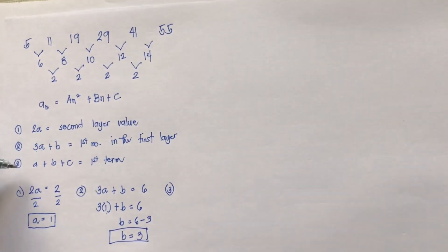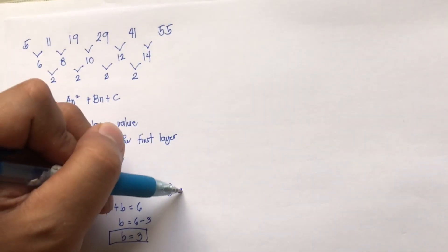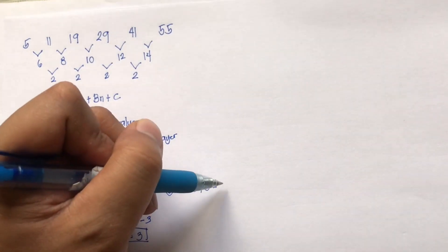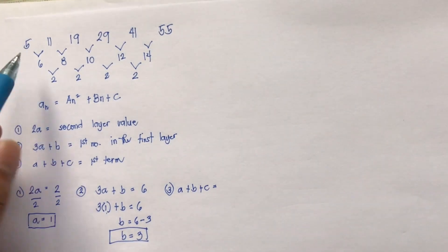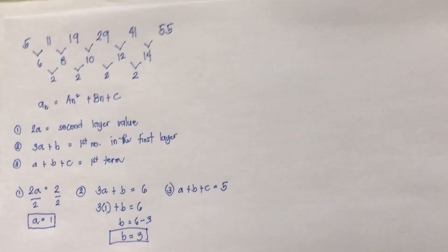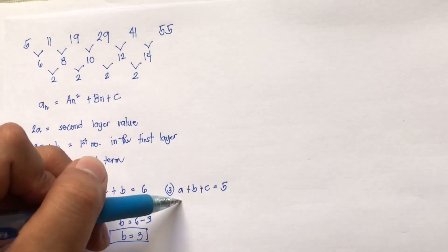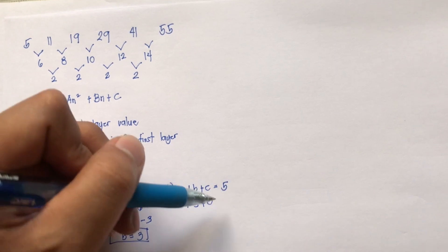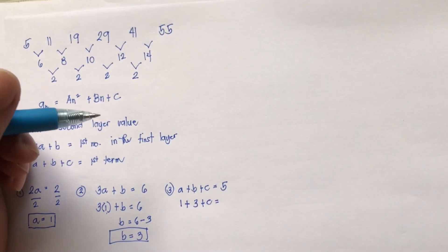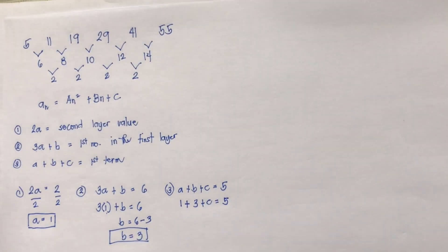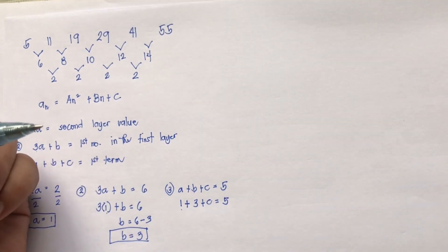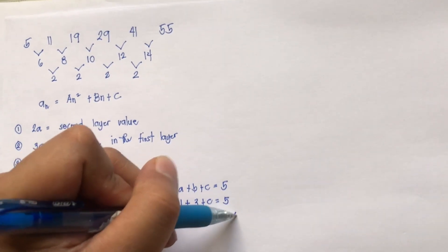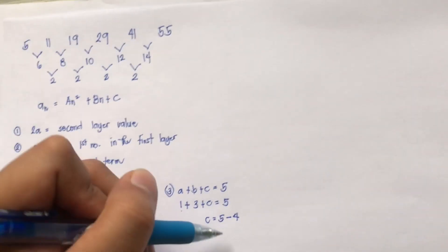The third formula: a plus b plus c equals the first term, which is 5. Substituting a = 1 and b = 3: 1 plus 3 plus c equals 5, so 4 plus c equals 5. Transposing gives c = 5 minus 4, so c = 1.